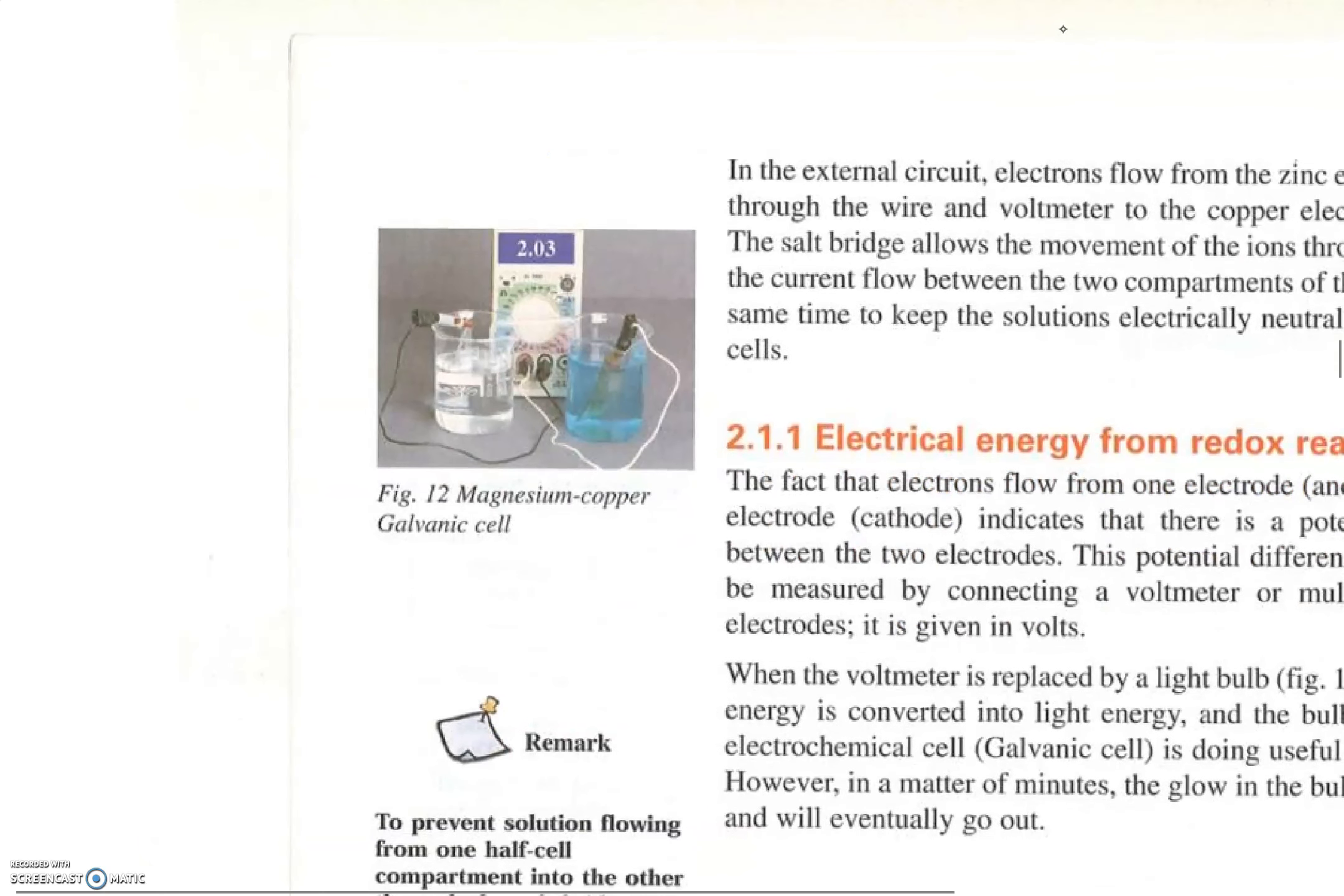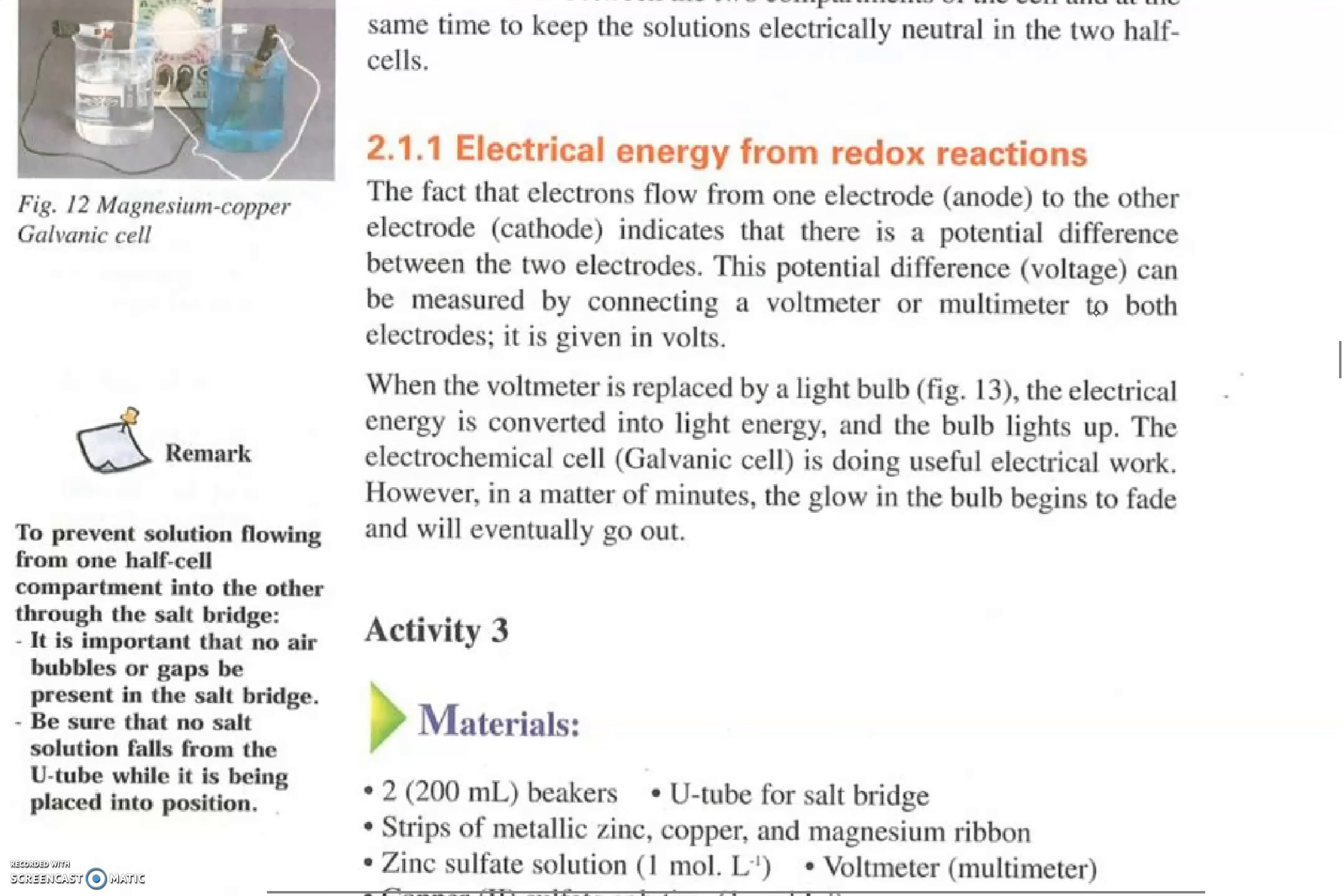We need to know that electrical energy is coming from this redox reaction, so the chemical energy is transformed into electric energy. Why? Because there is a potential difference between the two different elements, copper and zinc in this specific example. If we have a voltmeter, we can detect how many volts we have, or we can replace it with a light bulb that will light.